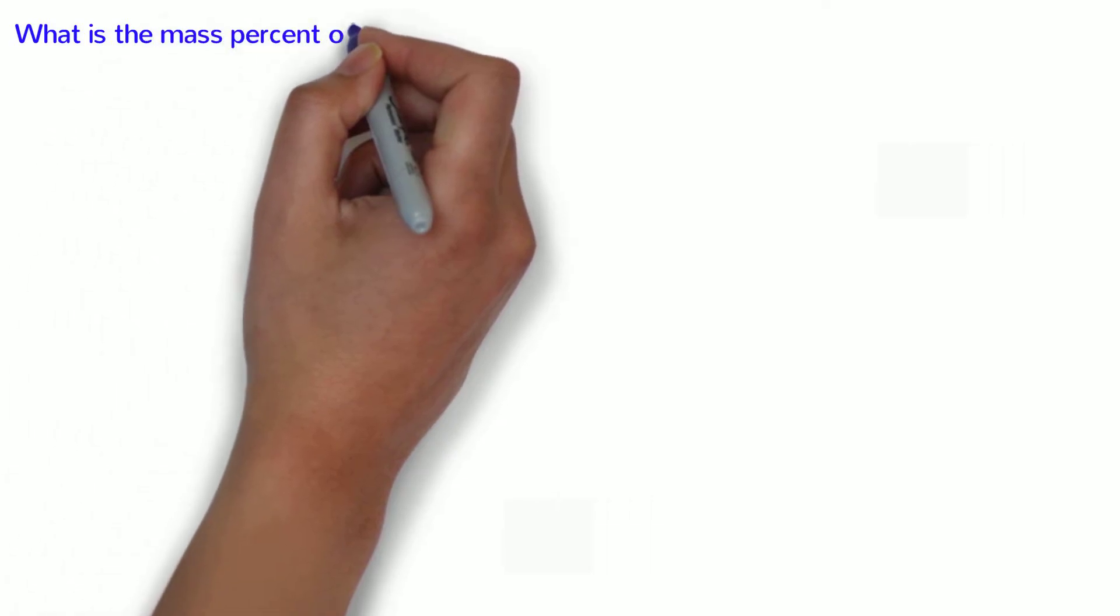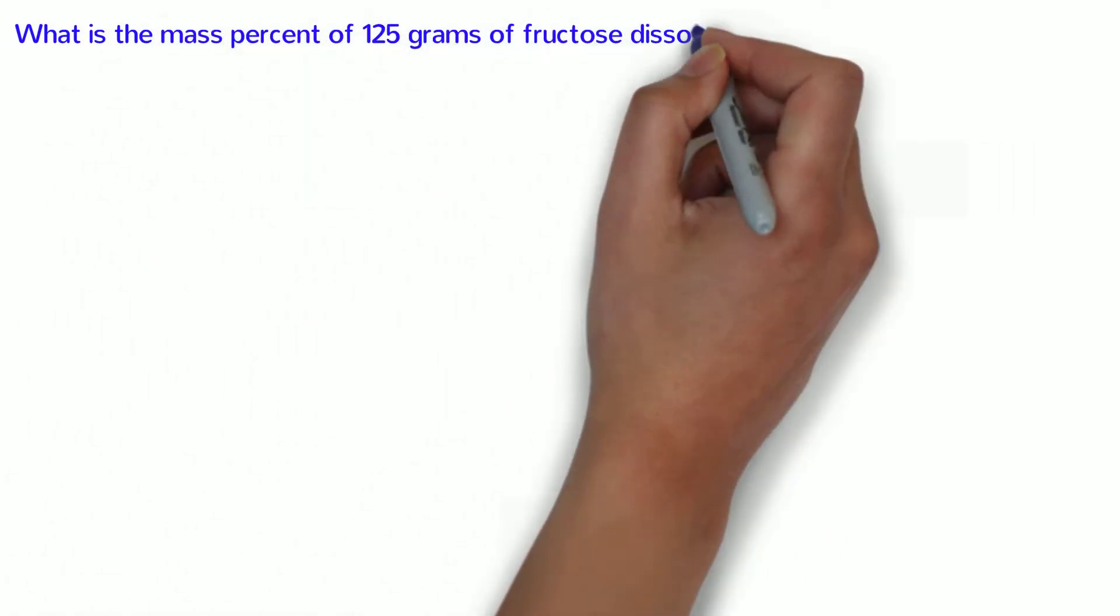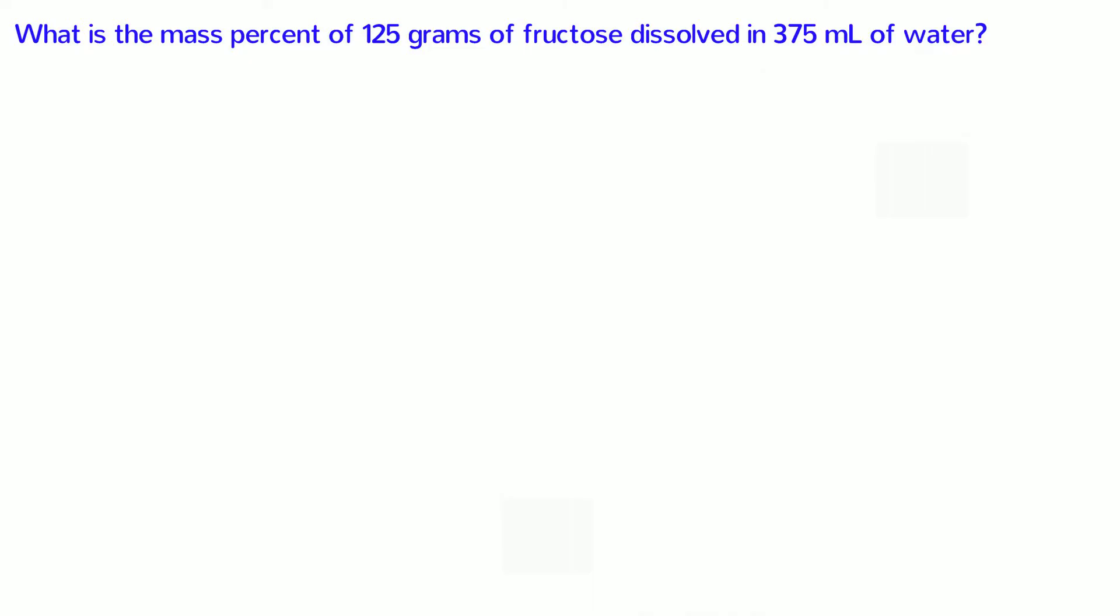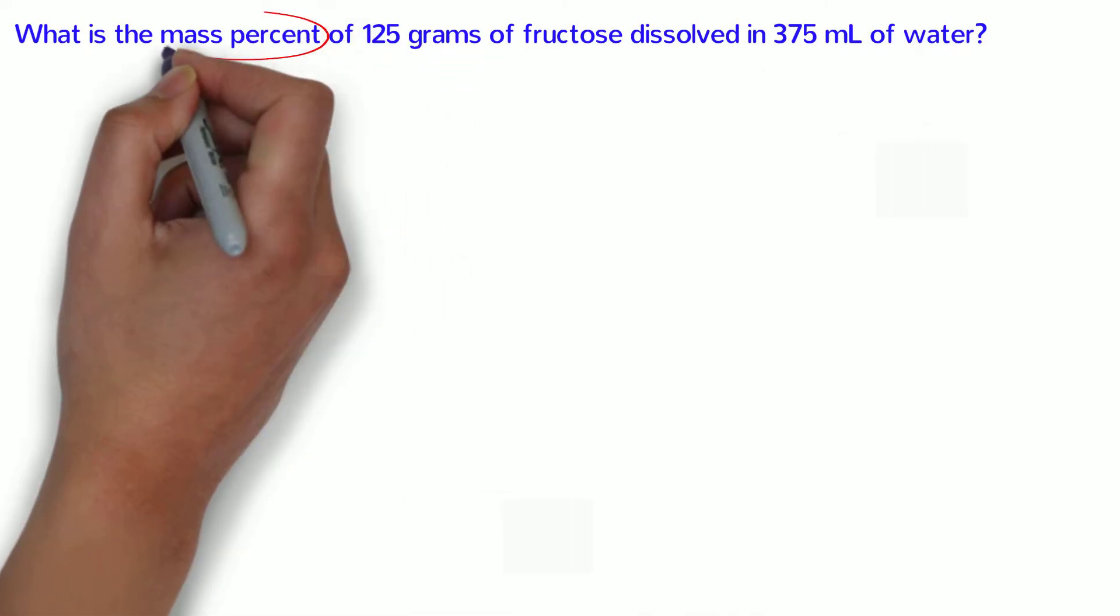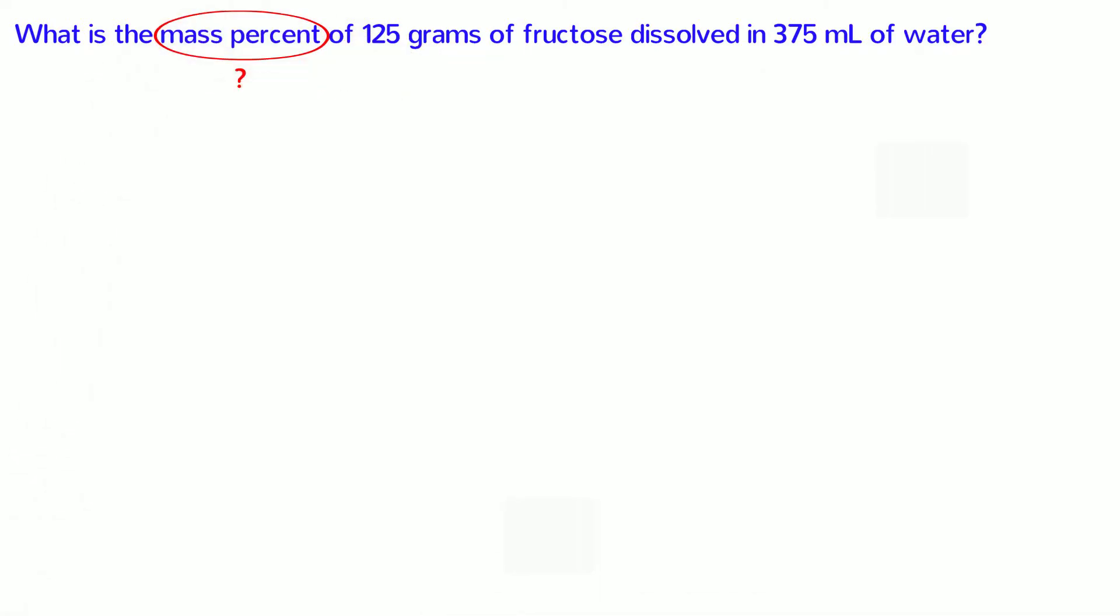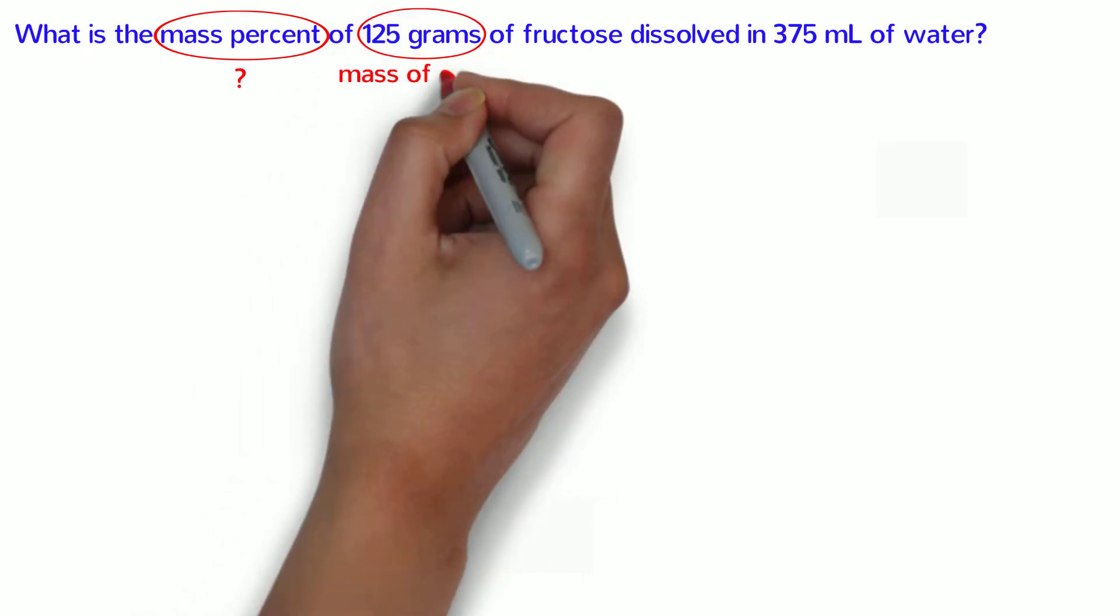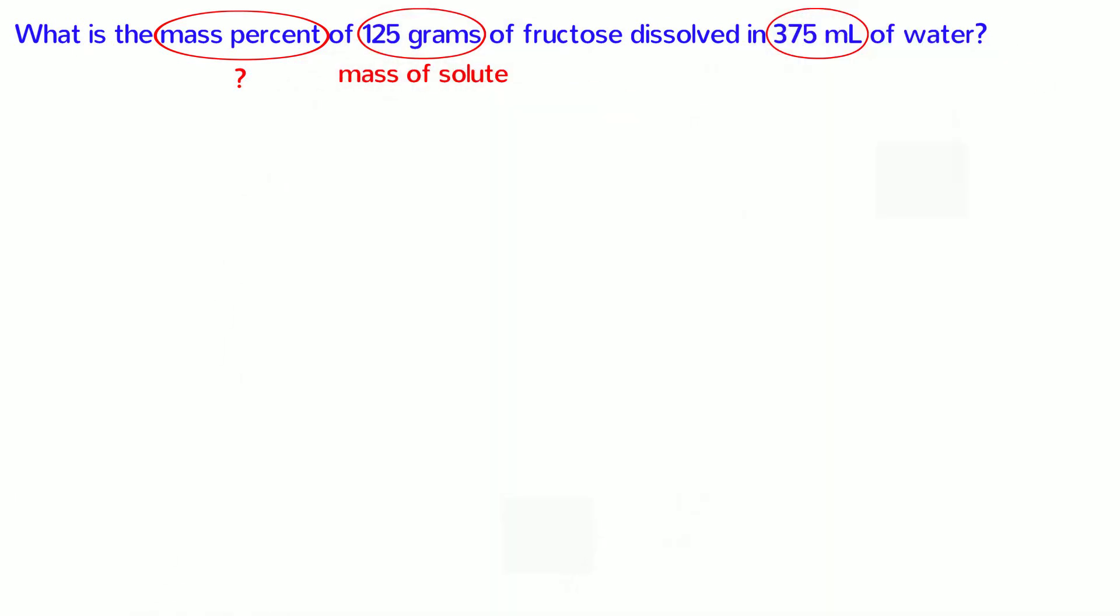What is the mass percent of 125 grams of fructose dissolved in 375 milliliters of water? Once again, we are solving for the mass percent concentration. 125 grams is the mass of the solute and 375 milliliters is the volume of the solvent. Volume? What do we do with volume?